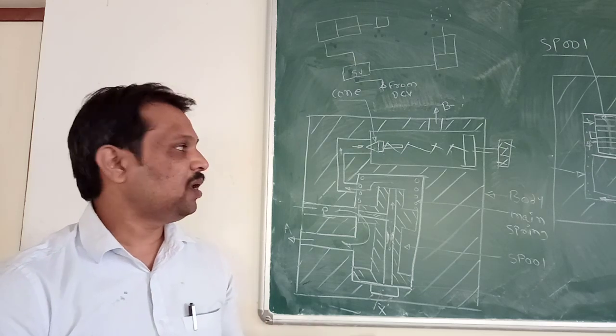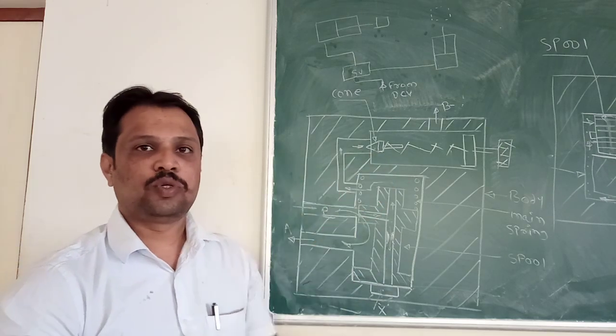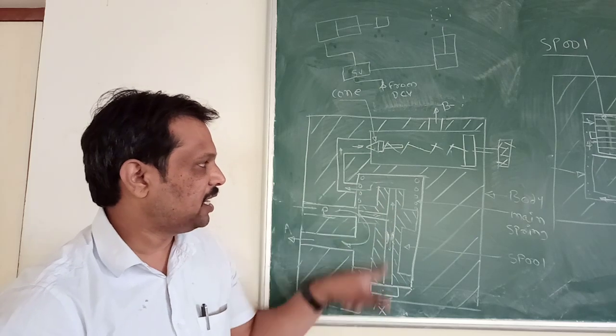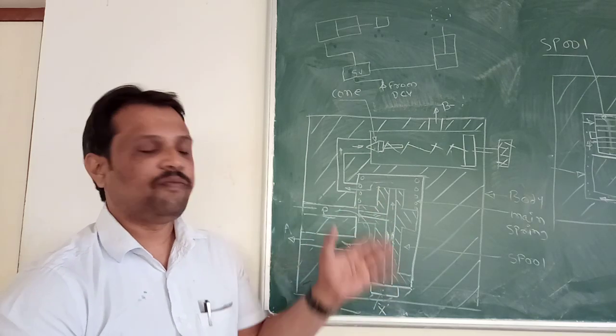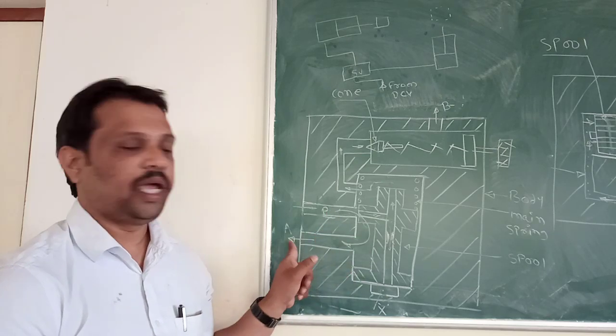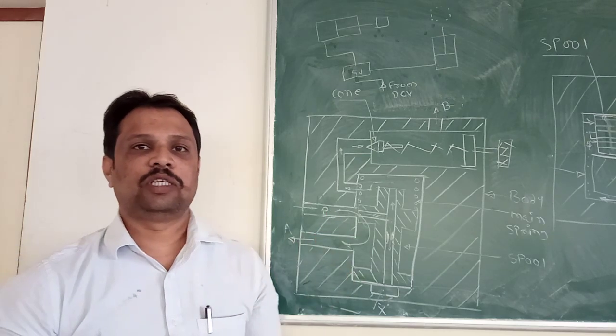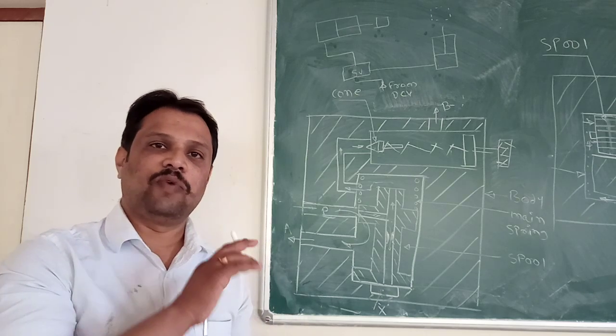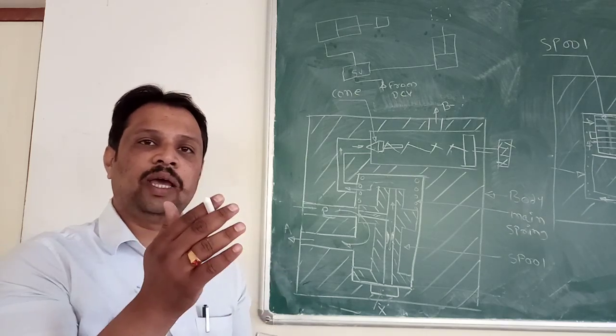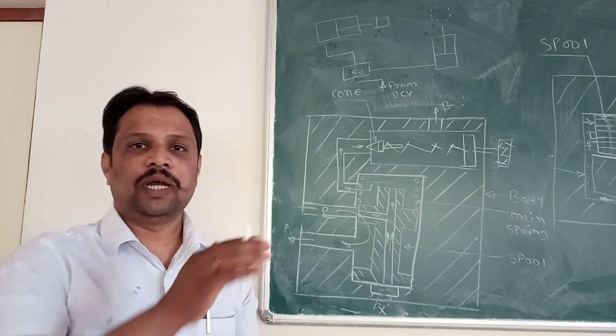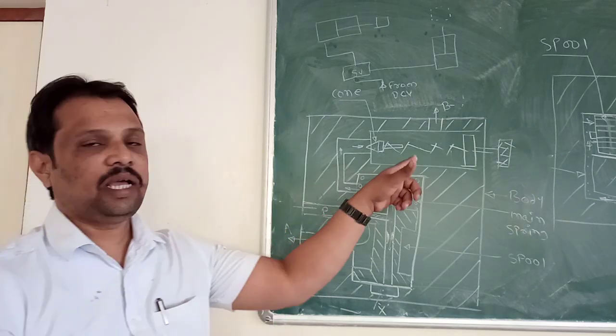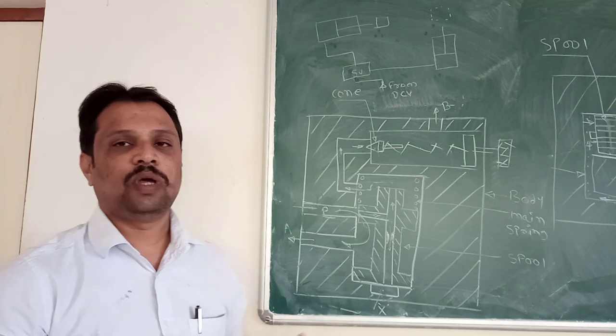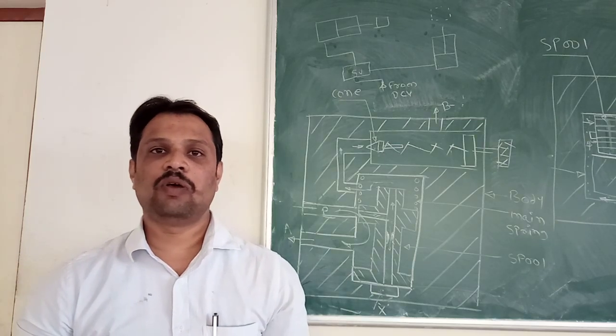Basically, what happens? When your conical poppet moves towards right, a pressure difference is created between these two, and the main spool gets lifted. Due to that, oil goes from P to A. This is how sequence valves work. First, oil goes from P to B. When the B operation completes, oil goes from P to A. This is how sequence valves work. Thank you.